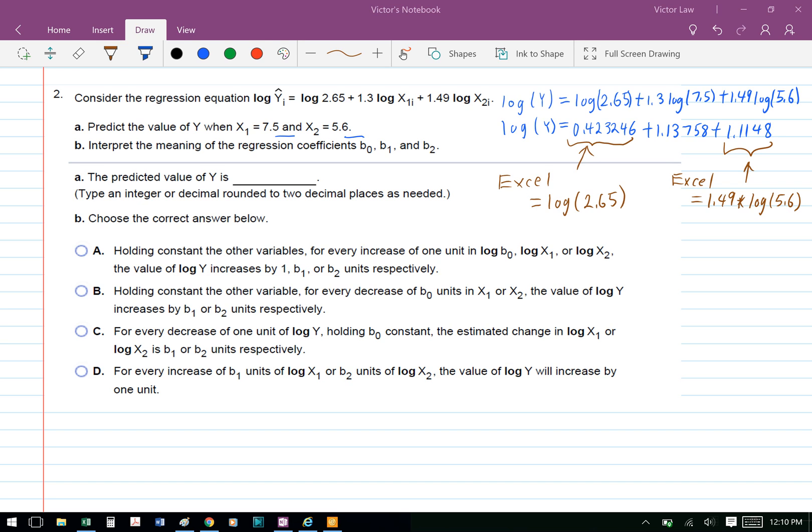For the last variable, we also use Excel. We put in the formula equals 1.49 times log(5.6), which gives us 1.1148. When we add these three numbers up, we get log y equals 2.675626.